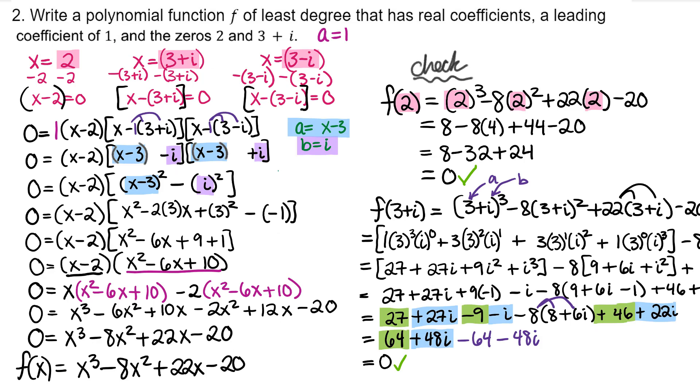And fortunately by complex conjugates theorem, if 3 plus i is a zero of a polynomial, then 3 minus i is also a zero of that polynomial, that polynomial with real coefficients. And now we know for sure that we got the correct polynomial.